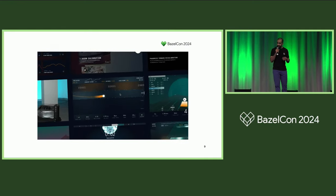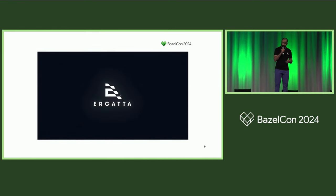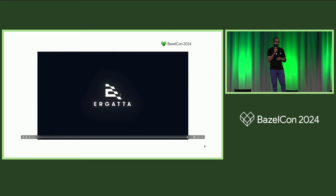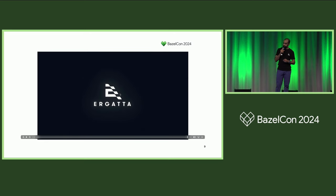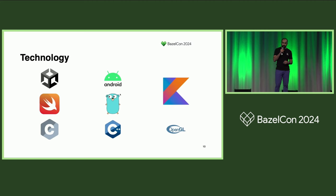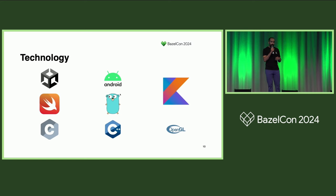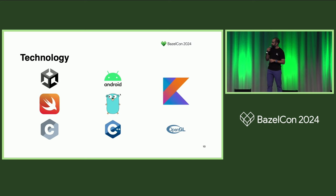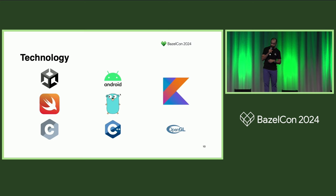What we deliver at its core is an Android app to our customers. Through this app, they work out and connect with the community. Within it are games written in Kotlin using the Android Canvas APIs, C and C++ using OpenGL, and C# using Unity 3D. This app communicates with the backend written in Go, as well as with companion apps written in Swift and Kotlin respectively.